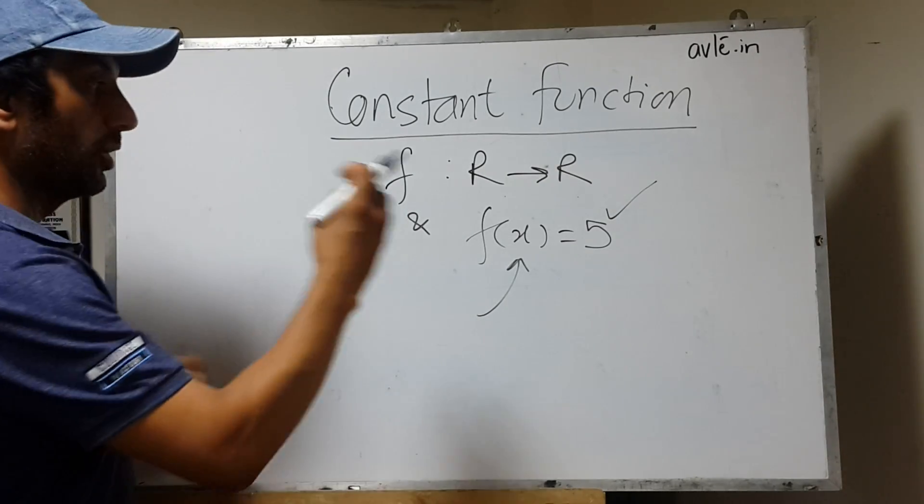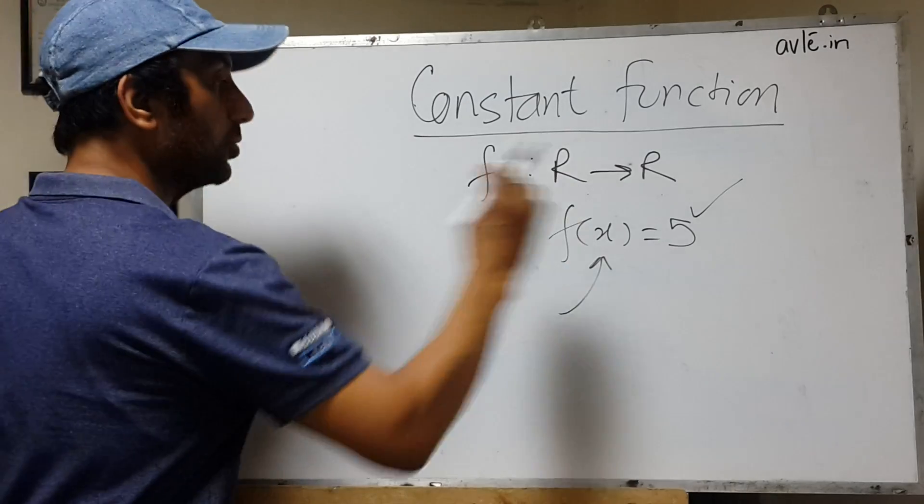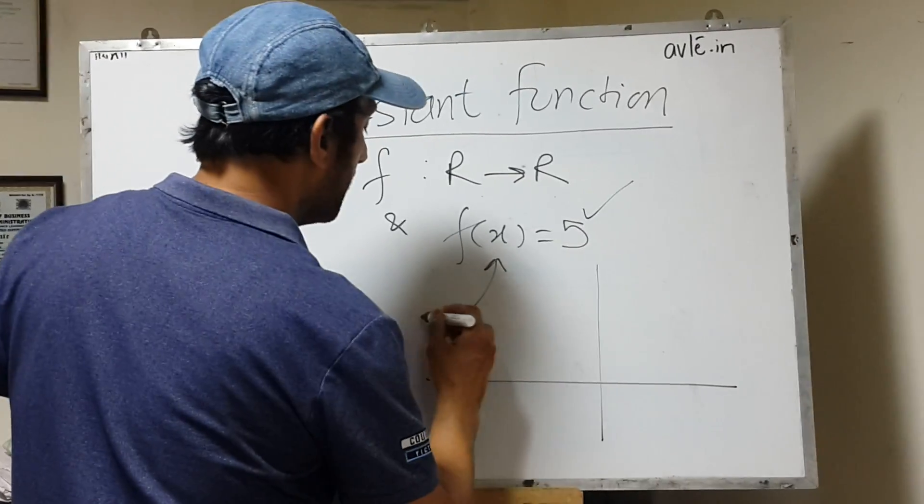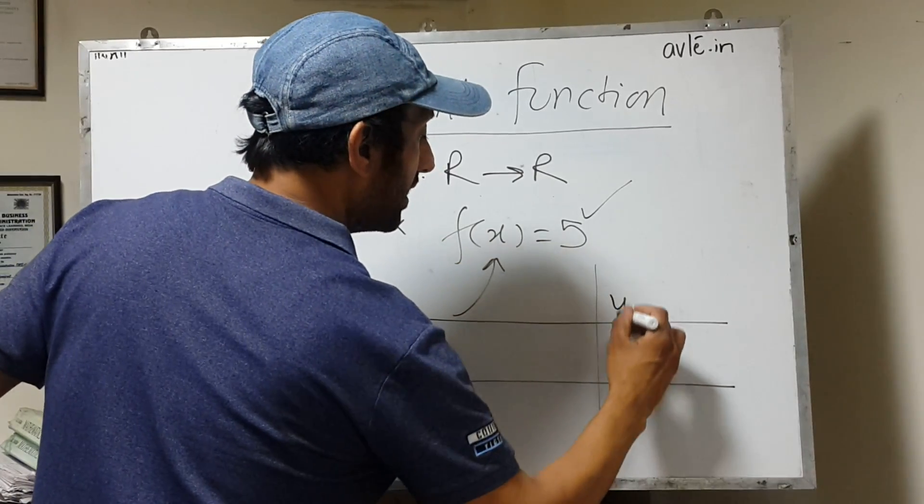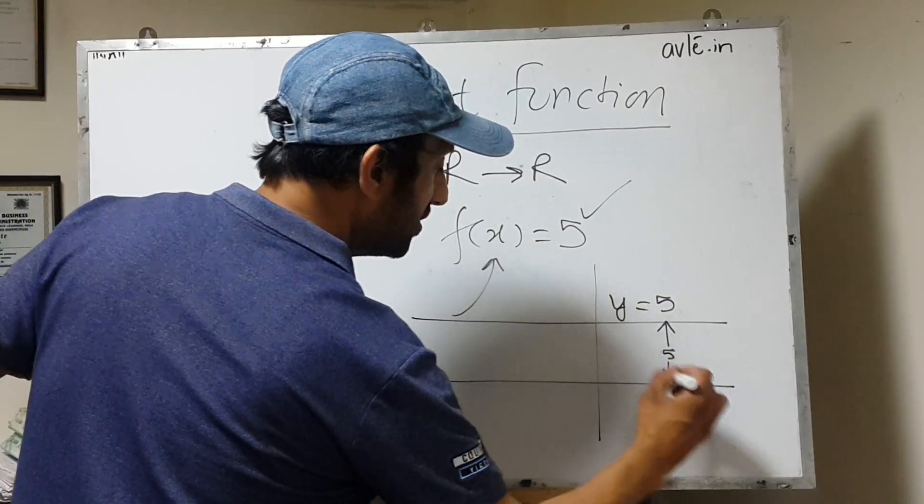Say, if I put 1, the output will be 5. If I put -1.7, the output will be 5. So the graph of this function will clearly be a line parallel to the x-axis with vertical distance 5 units.